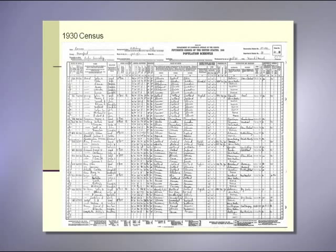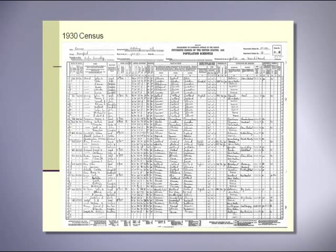This is the 1930 census, the most recent census available. For the first time it asks how much you pay in monthly rent, or if you bought your house and for how much, and whether you have a radio. It gives the place of birth of the person, their father, and their mother — a feature that started in 1880. It also asks if you're a veteran of any war, giving an idea of pension obligations. In 1930 they give both the occupation and the industry. President Hoover's occupation is listed as President of the United States, but his industry is federal employed.